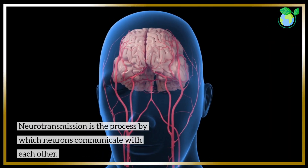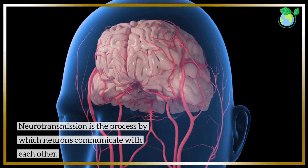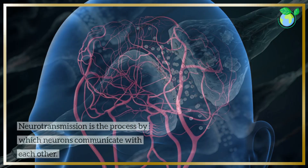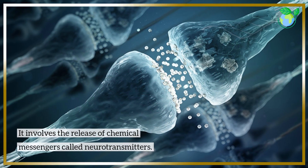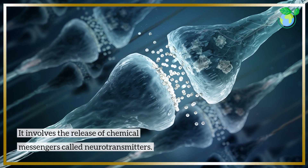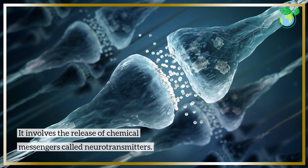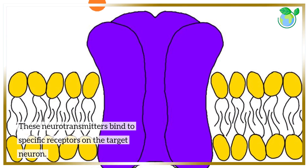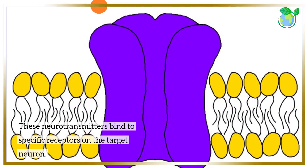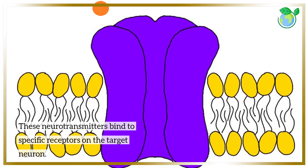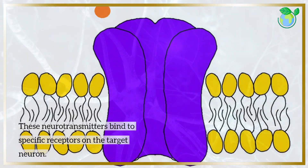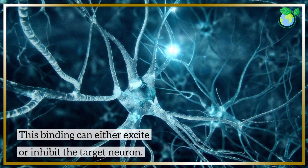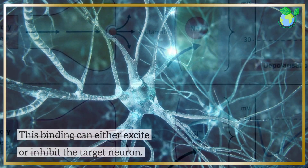Neurotransmission is the process by which neurons communicate with each other. It involves the release of chemical messengers called neurotransmitters, which bind to specific receptors on the target neuron. This binding can either excite or inhibit the target neuron.